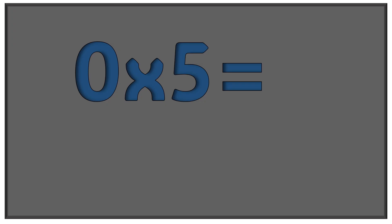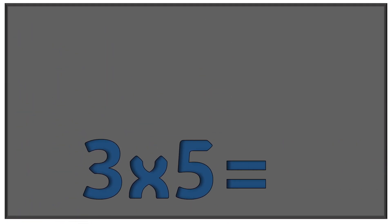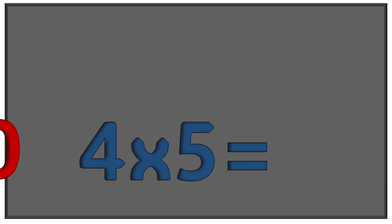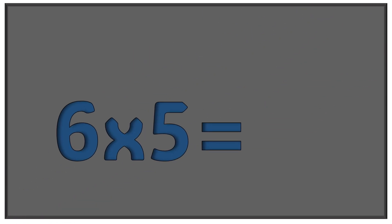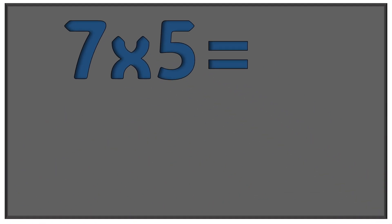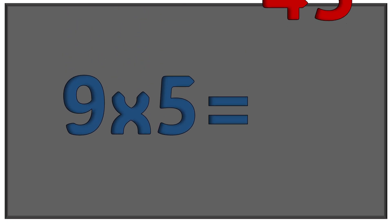0 times 5 equals 0. 1 times 5 equals 5. 3 times 5 equals 15. 4 times 5 equals 20. 5 times 5 equals 25. 6 times 5 equals 30. 7 times 5 equals 35. 5 times 2 equals 10. 9 times 5 equals 45. Fantastic! Fantastic!